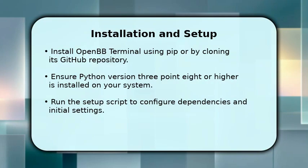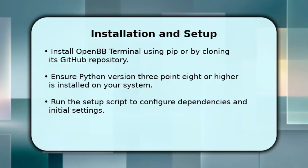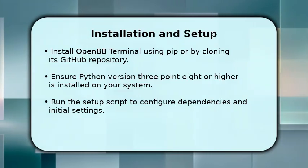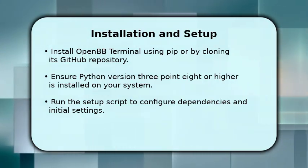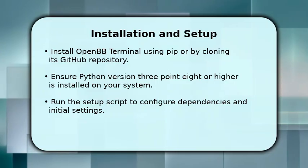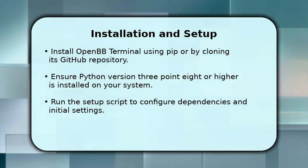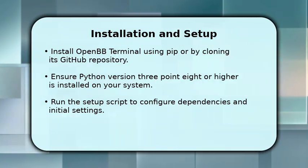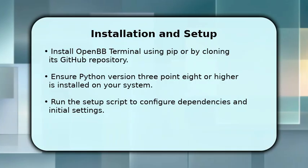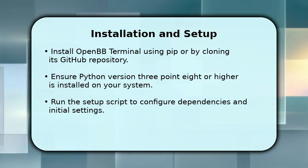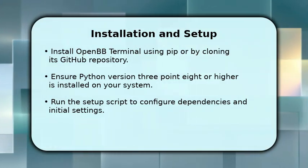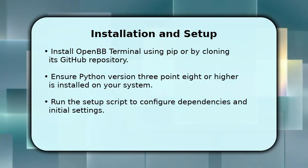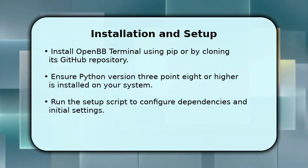Getting started with OpenBB Terminal is straightforward. You can easily install it using pip or by cloning the GitHub repository directly. Just make sure you have Python version 3.8 or newer installed on your computer first. After installation, simply run the setup script to configure all necessary dependencies.